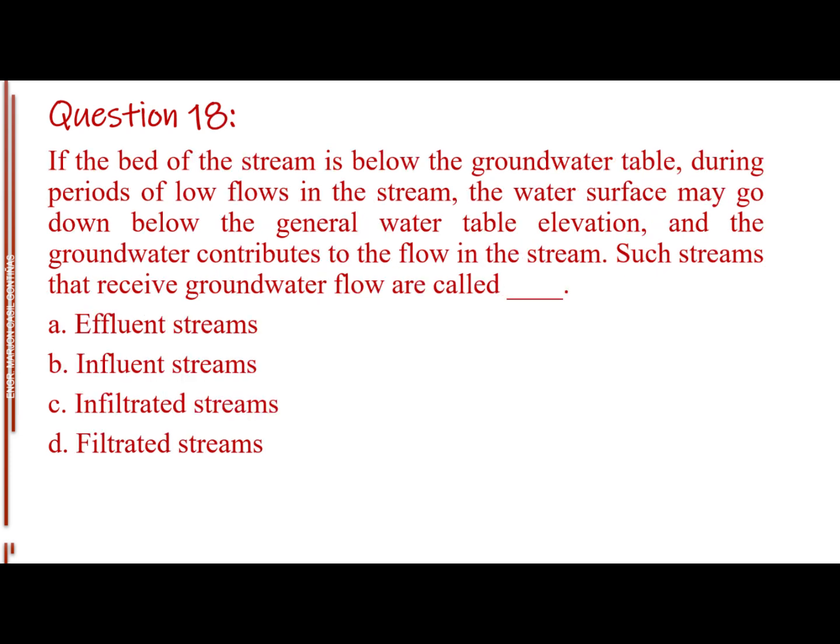Question number 18. If the bed of the stream is below the groundwater table, during periods of low flows in the stream, the water surface may go down below the general water table elevation, and the groundwater contributes to the flow in the stream. Such streams that receive groundwater flow are called blank. Letter A, Effluent Streams. Letter B, Influent Streams. Letter C, Infiltrated Streams. Letter D, Filtrated Streams.